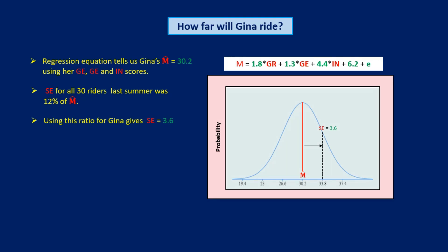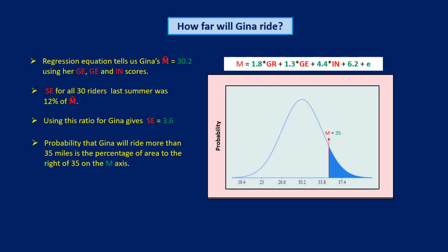Here, then, is Gina's probability distribution, with M-hat of 30.2 and SE of 3.6. The probability that Gina's M next summer will be 35 or more is equal to the area under the curve lying to the right of 35 on the M-axis. In the old days, to find out what this percentage is, I'd have to consult a probability distribution table in the back of my statistics textbook. But these days, I can use a handy probability distribution calculator available online at hackmath.net.